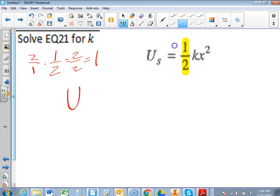So we're going to have u sub s equals, we'll do 2 times a half. Actually, we need to multiply it by the 2 on both sides. So I'm multiplying by this 2 on both sides. That's going to get rid of the half, and I'm going to have 2u sub s equals kx squared.